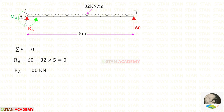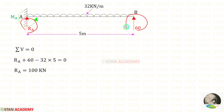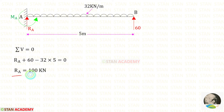Now let us apply sigma V equals 0 to find RA. RA and RB are acting upwards, so both are positive. The uniformly distributed load is acting downwards, so it is negative. We multiply the uniformly distributed load with the distance. Finally for RA we get 100 kN.